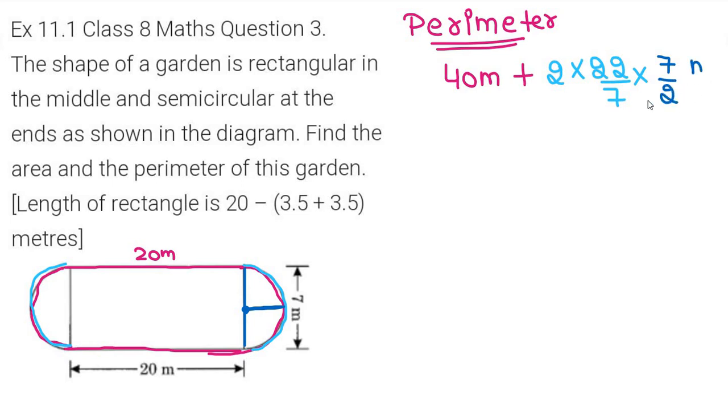If you calculate, 7 and 7 cancel with 2 and 2, and 40 plus 22 gives 62 meters. So this is your perimeter - easy to do.